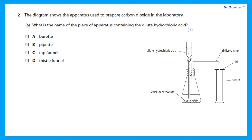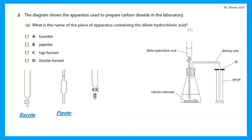Question 2: The diagram shows the apparatus used to prepare carbon dioxide in the laboratory. What is the name of the piece of apparatus containing the dilute hydrochloric acid? Is it a burette? No — a burette has a tap and also has graduations; this does not have graduations. Is it a pipette? A pipette is an accurate method of measuring volume, but it only has a mark (e.g., 25.0 cm³). Is it a tap funnel? Something that looks like a burette with no graduations but has a tap is called a dropping funnel or tap funnel. A thistle funnel does not have a tap. So the answer is a tap funnel or dropping funnel.